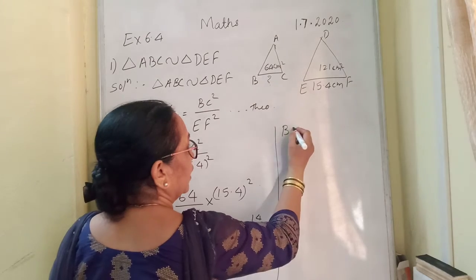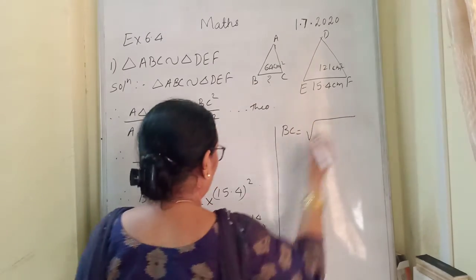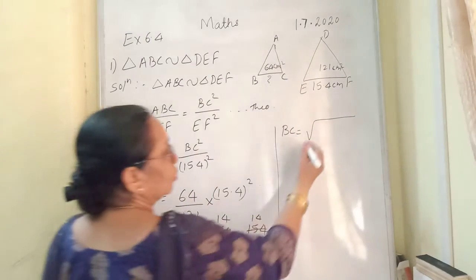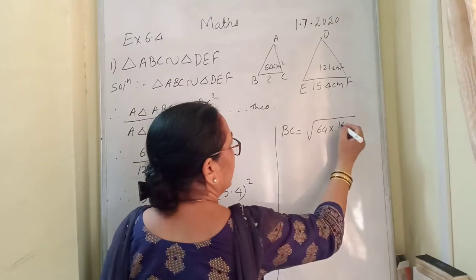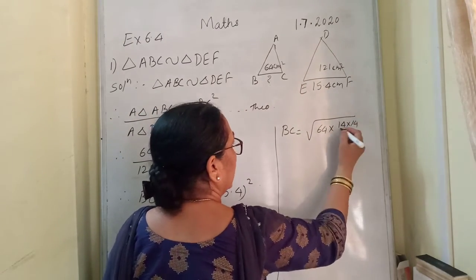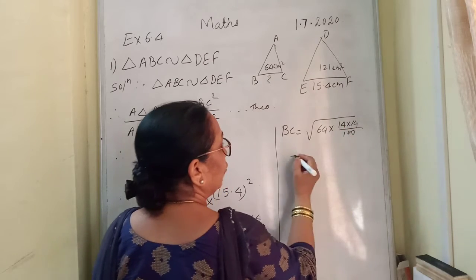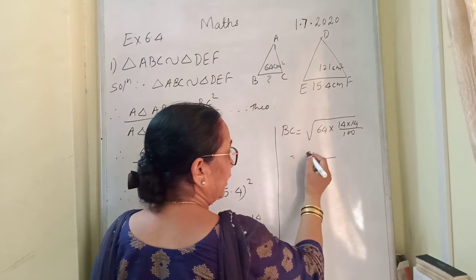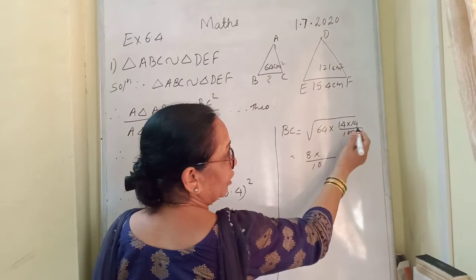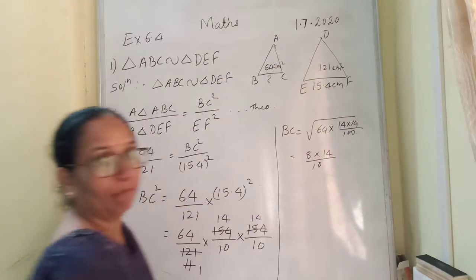Therefore, BC will be equal to root of right hand side. So, root of 64 into 14 into 14 upon 100. So for 100 I will be writing 10, for 64 I will be writing 8, and for 14 into 14 I will be writing 14.